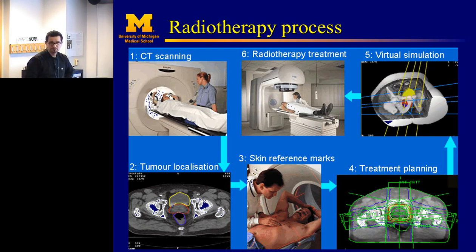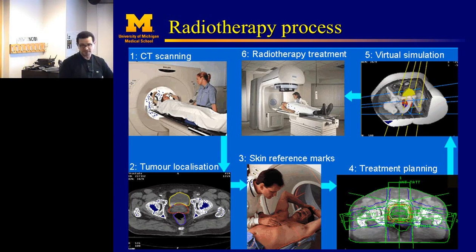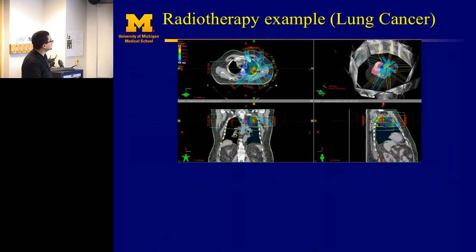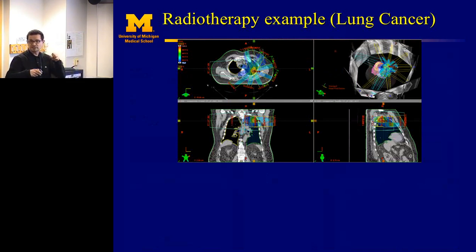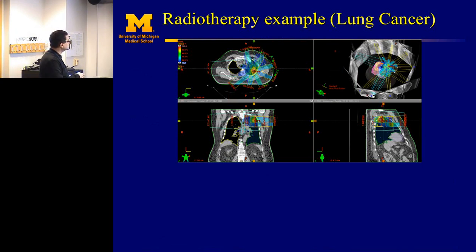How precisely can you aim? Sub-millimeters — you can go sub-millimeter, actually. You have to do it very precisely. One of these precise treatments is stereotactic radiotherapy, or SBRT, for the lung. The multiple beam directions intensify at the point of interest while reducing dose at the periphery around it. This shows transverse, coronal, and sagittal views — this is the virtual simulation process.